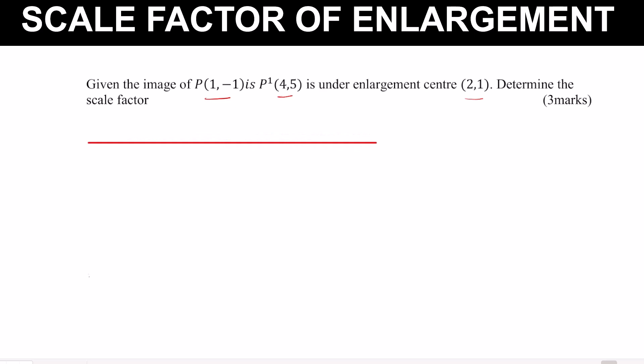To illustrate this for better understanding: we have the center at (2, 1), we have P — the object — at (1, -1), and we have P' — the image — at (4, 5). Now, how do we get the scale factor of enlargement?